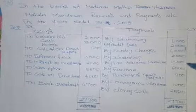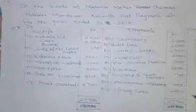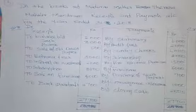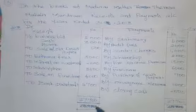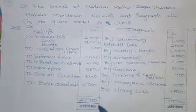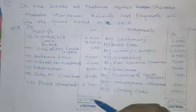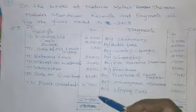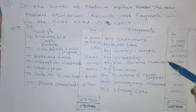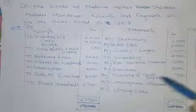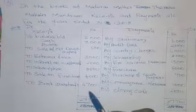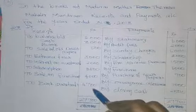Credit side balance — debit side Rs. 23,000; credit side Rs. 27,700. Payment side is more than income received. Expenditures are more than income, so it is an unfavorable balance — that is bank overdraft Rs. 4,700.